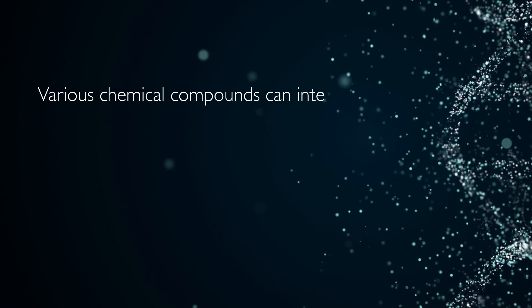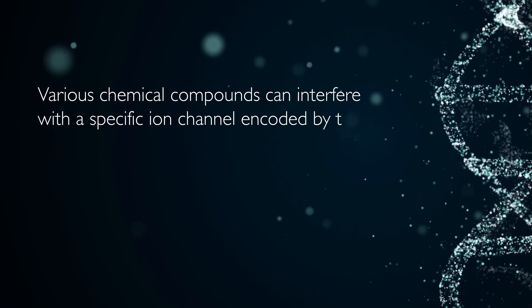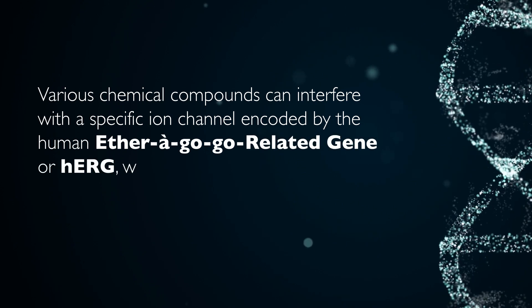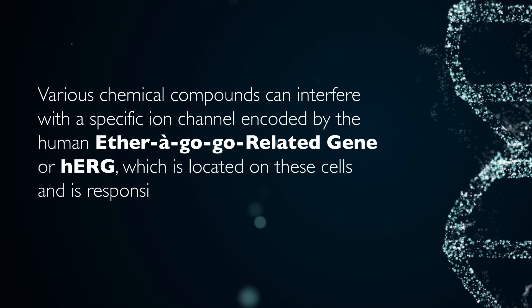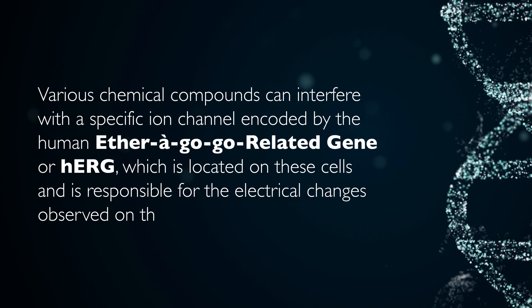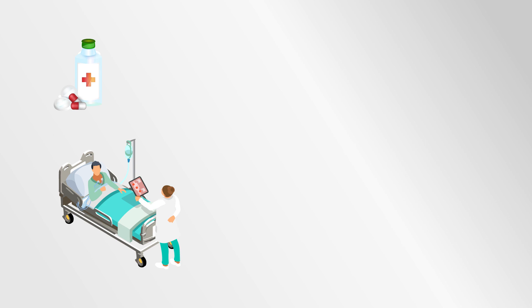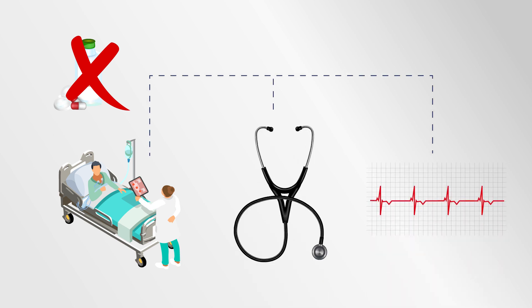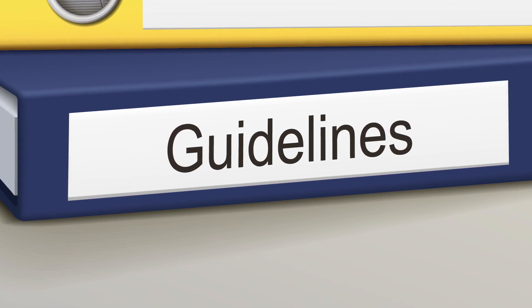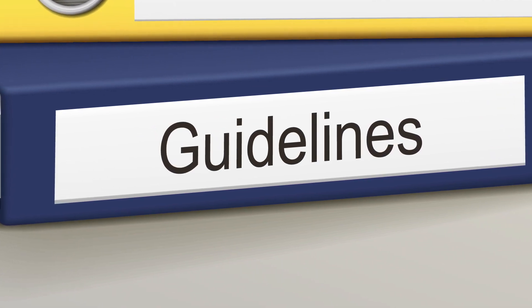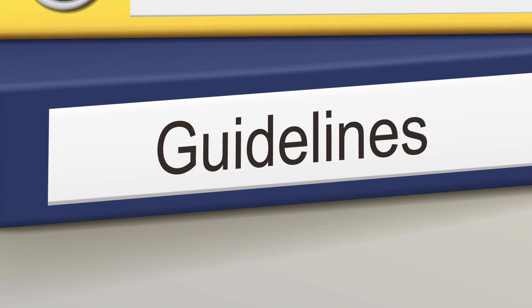Various chemical compounds can interfere with a specific ion channel encoded by the human ether-a-go-go-related gene, or HERG, which is located on these cells and is responsible for the electrical changes observed on the ECG. Several drugs have been withdrawn from the US market or have received label warnings due to their potential to cause QT interval prolongation that leads to fatal arrhythmias and sudden cardiac death. As such, QT interval prolongation is used as an important biomarker for drug-induced arrhythmia risk in cardiovascular safety studies and is listed in the guidelines of the International Council on Harmonization and other regulatory agencies.